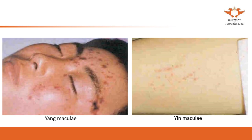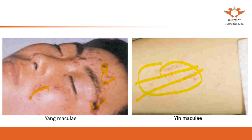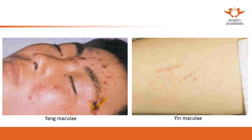For both yang maculae and yin maculae, although you can see the colors on the skin, very importantly these rashes do not elevate from the skin. If you touch or palpate the skin, you don't feel anything — you can see it but you can't feel it. This means it is bleeding under the skin. That is the maculae, and yin versus yang are distinguished by color.